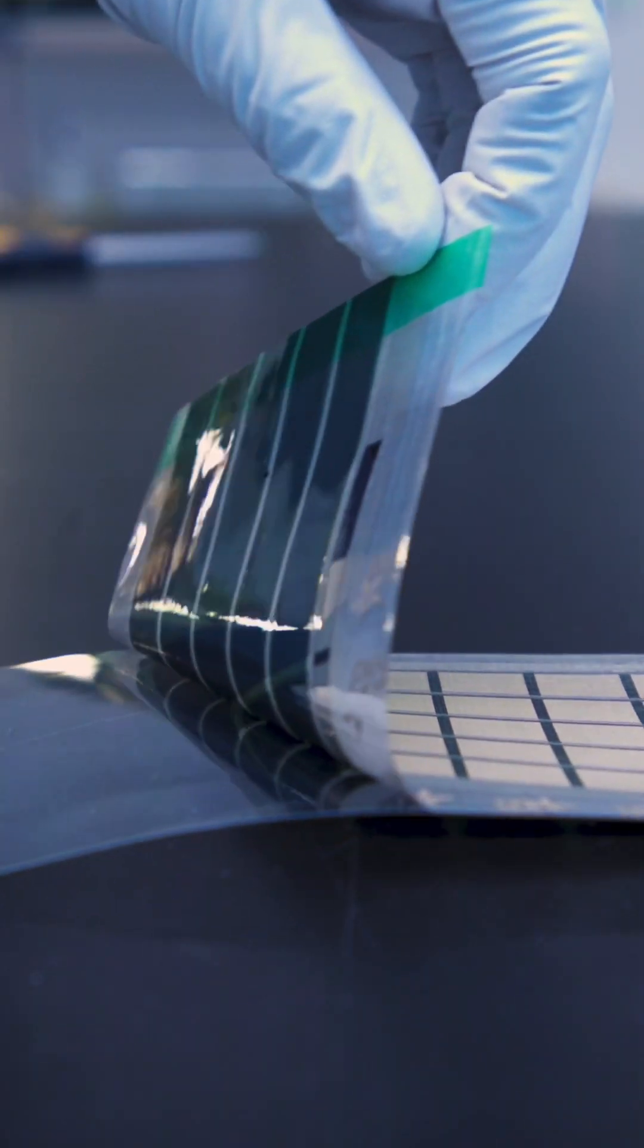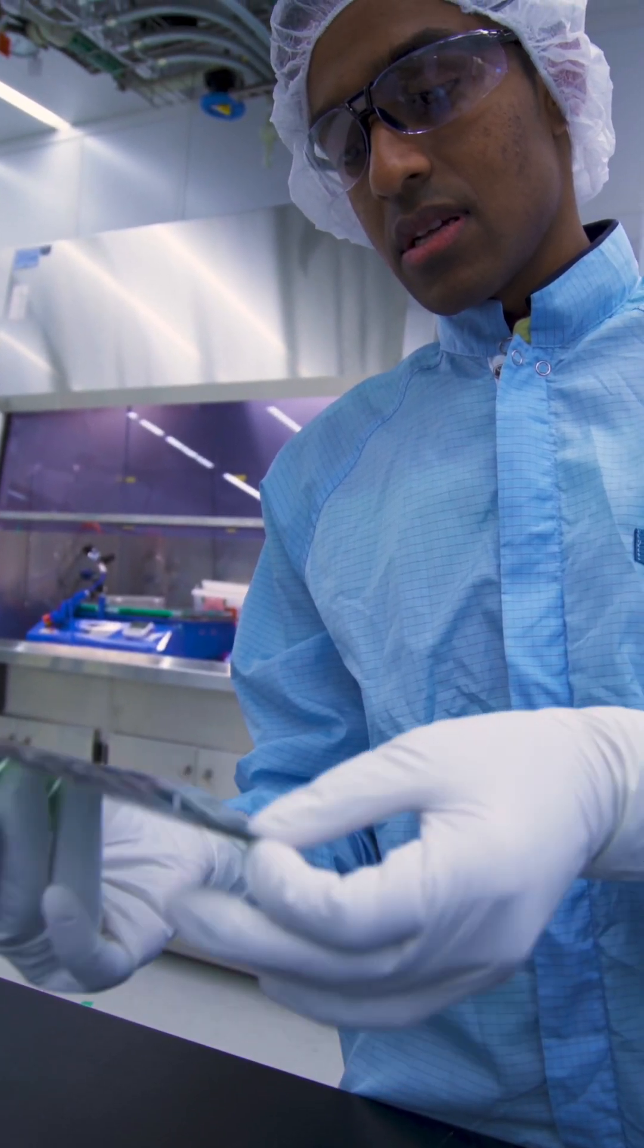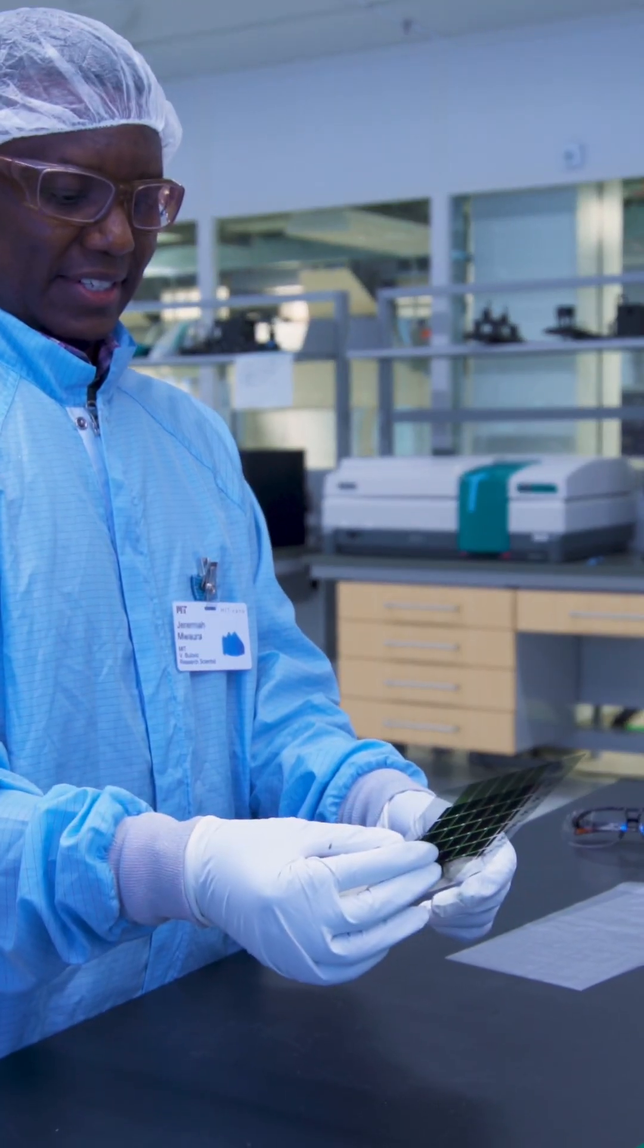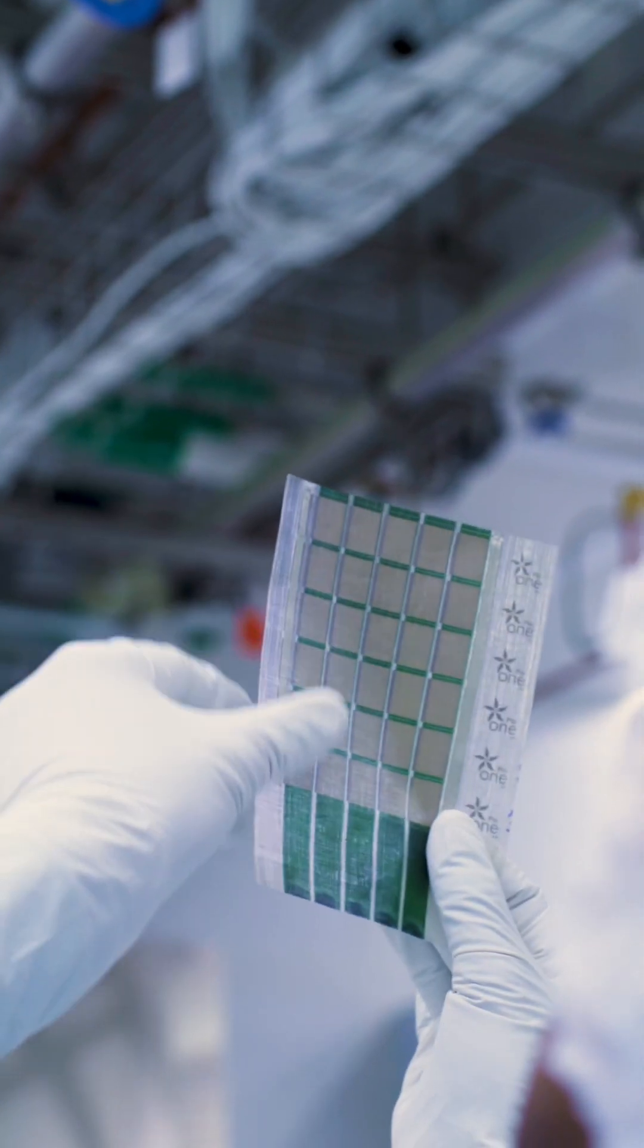Solar panels as thin as paper and as flexible as fabric that could be applied to many different surfaces and used in a wide variety of applications could be available soon thanks to a new approach to manufacturing solar cells being developed at MIT.